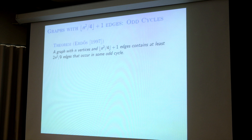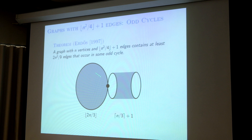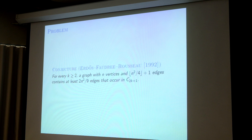Actually, 2n²/9 is sharp by this example: take a clique of size 2n/3, take a complete bipartite graph of size n/3, and join them by a vertex. Basically a clique and a complete bipartite graph. If you want to be in some odd cycle, you have to be in this clique. This is sharp. So what if we want to fix the length of the odd cycle? This is conjectured by Erdős-Faudree-Roth.